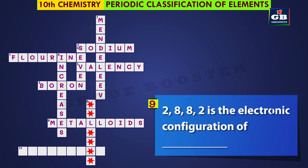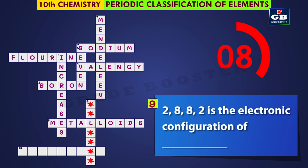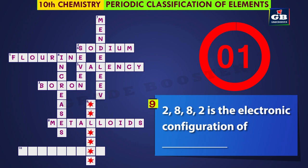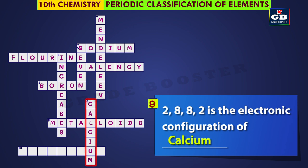Nine down: two eight eight two is the electronic configuration of dash. The answer is Calcium. Two eight eight two is the electronic configuration of calcium.